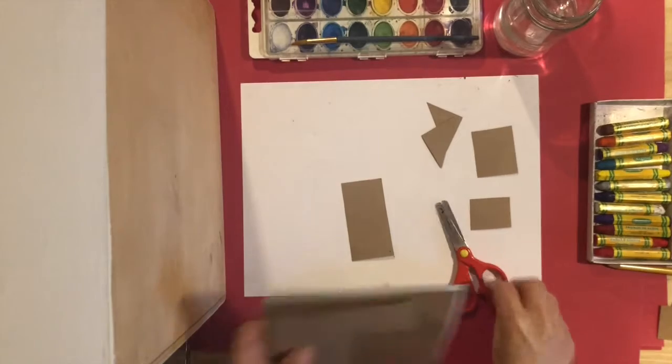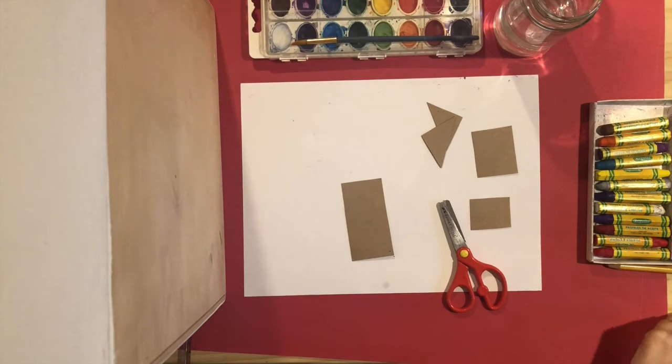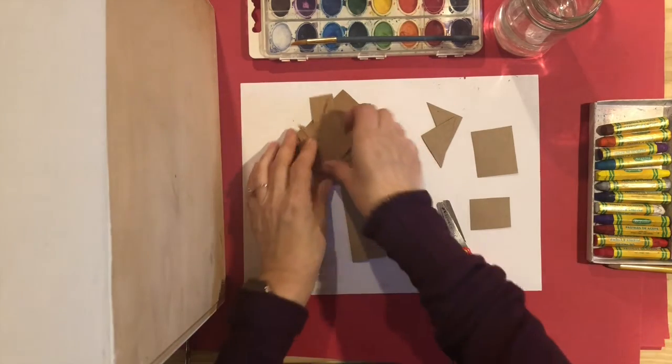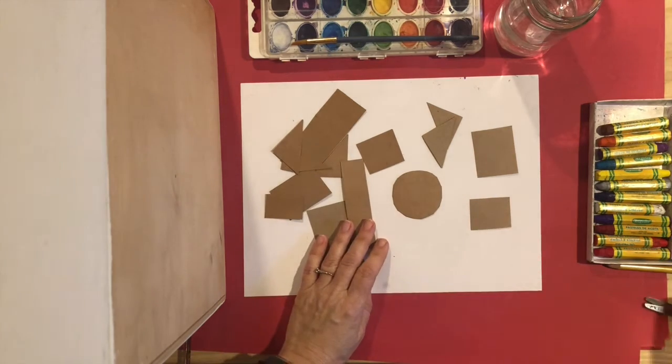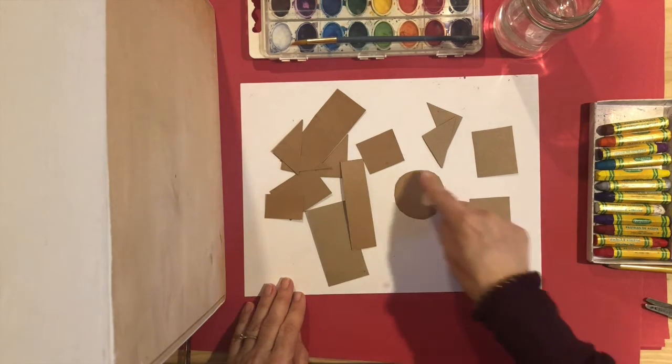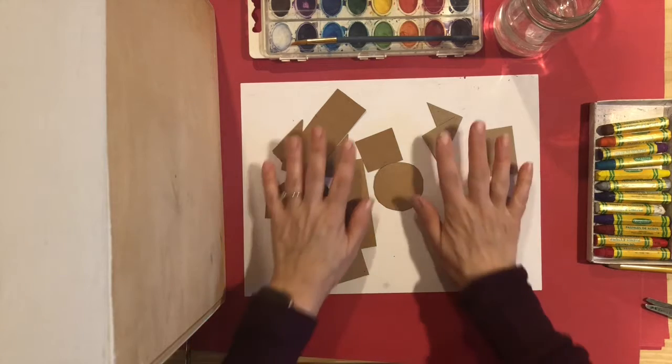Okay, so now I have some shapes. I have a few more here. You could even make a circle - you might want to draw around something to make your circle.